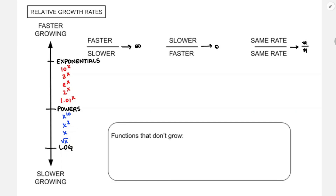Underneath all of these, the slowest growing function we know in this class is log — specifically natural log. Square root of x is definitely growing slower than regular x because that's x to the 0.5 versus x to the 1, and you could even have cube root, which is x to the 1 third.